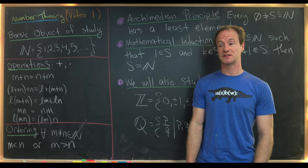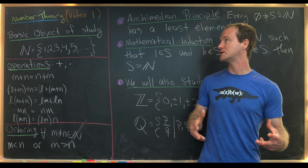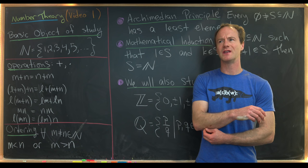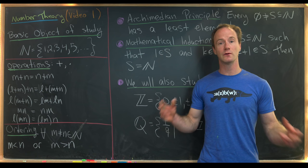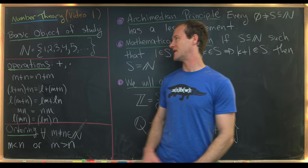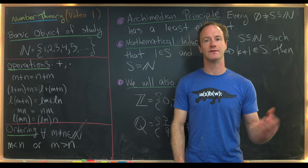I want to start off with our most basic object of study in this course, and that would be the natural numbers. We will not completely construct these natural numbers in a set-theoretic way, but we will prove some things involving the Peano axioms a little bit later. By the natural numbers we mean the positive integers: one, two, three, four, five, and so on. We will not consider zero a natural number in this course.